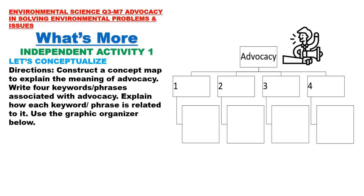Let us now answer the different activities in What's More. Independent Activity 1 — Let's Conceptualize: Construct a concept map to explain the meaning of advocacy. Write 4 keywords or phrases associated with advocacy, and explain how each word or phrase is related to it. Use the graphic organizer provided.